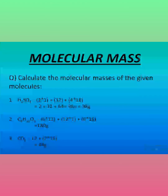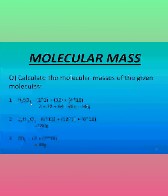I will show you some examples of how to calculate molecular masses. The first example I am taking is sulfuric acid. How do we calculate the molecular mass of sulfuric acid? We have to first see how many atoms are there. Sulfuric acid has three types of atoms: hydrogen, sulfur, and oxygen.